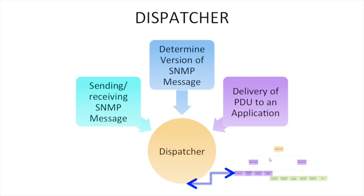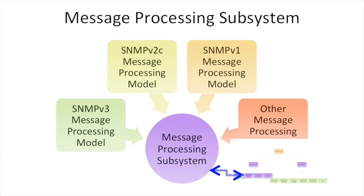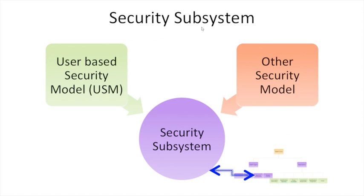Under the SNMP entity, the message processing system includes the message processing model, and also supports version 2c and version 1 message processing models along with others. Then we have the security subsystem, which introduces the new term User-Based Security Model, or USM, defined in SNMPv3. On top of that, other security models already in place are also included, and together they define the security subsystem of the SNMP entity.